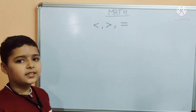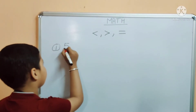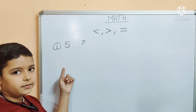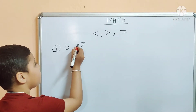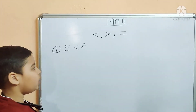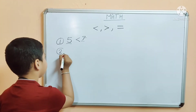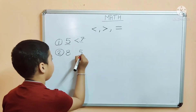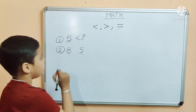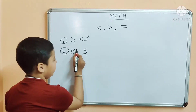Let's take some examples to learn this. Number 1: 5 and 7 — which symbol do we take here? Yes, it is the less than symbol, because 5 is smaller and 7 is bigger. Number 2: 8 and 5 — here 8 is the bigger number and 5 is the smaller number. So which symbol do we take here? Yes, it is the greater than symbol.